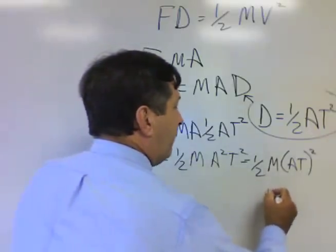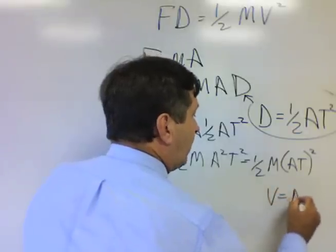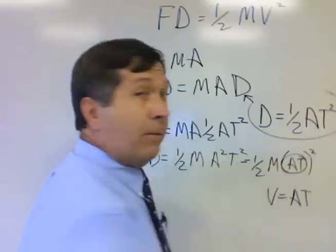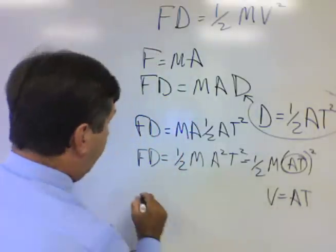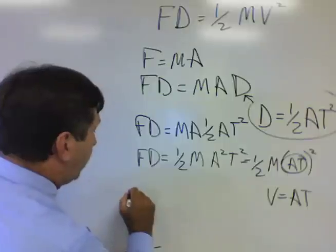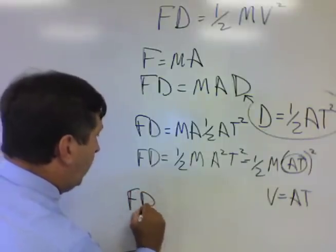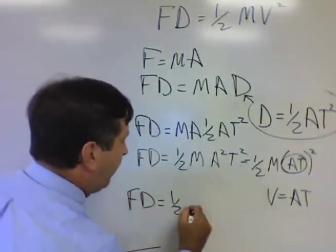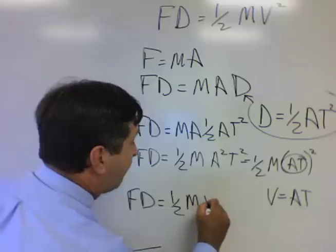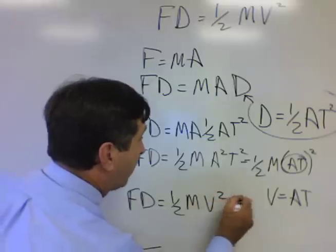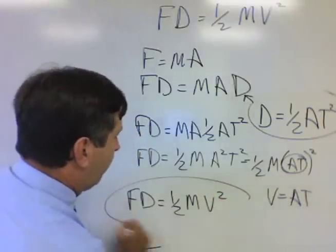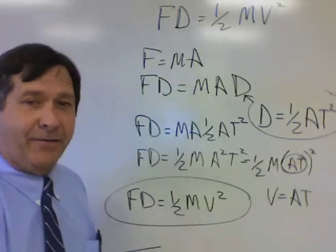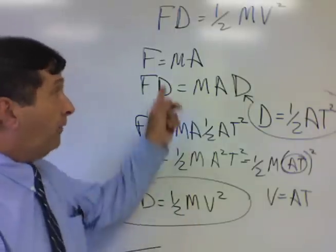Now we're really close. Going back to those kinematic equations, we remember velocity equals acceleration times time, meaning that 'at' can be replaced with velocity. The equation becomes Fd equals one half mv squared. There we have it — work equals kinetic energy, all from F equals ma.